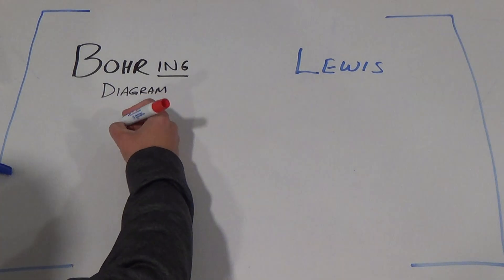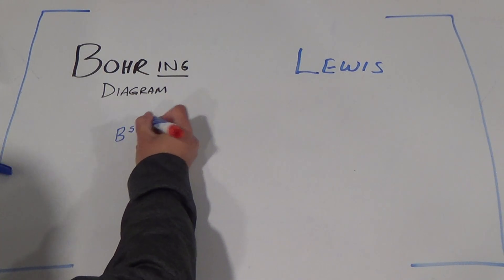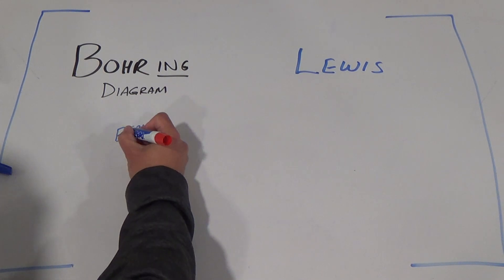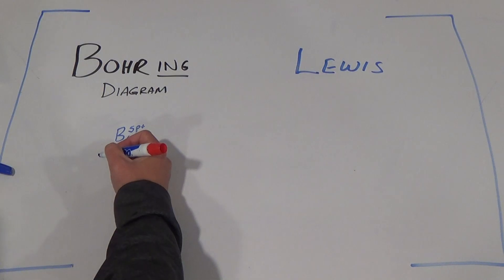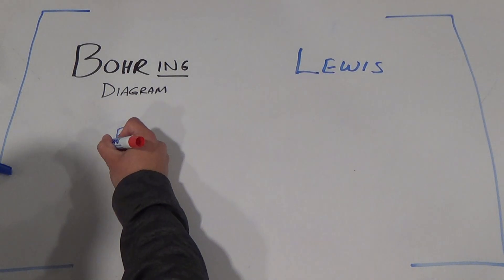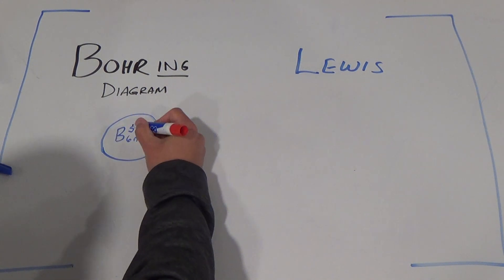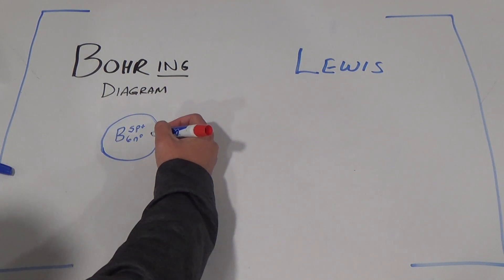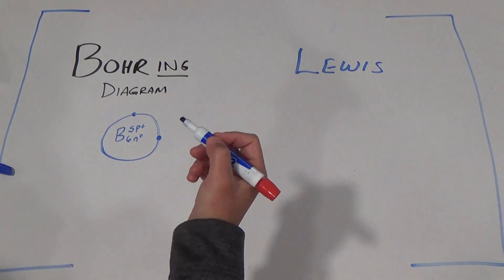So let's take a look at the boring diagram of boron. Boron has five protons, so I'm going to put the B right there to show boron. It's got five protons and the mass is 11, so it's got six neutrons. For the boring diagram, we have to show every level. Here we go. You know how to do this. First level, how many electrons? We have five protons, we need five electrons. One goes there, two goes there. Are we done yet? No.